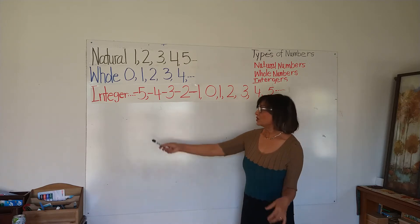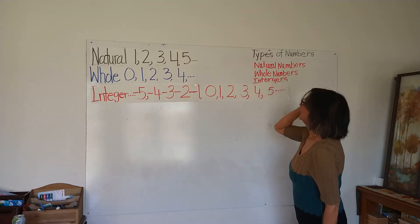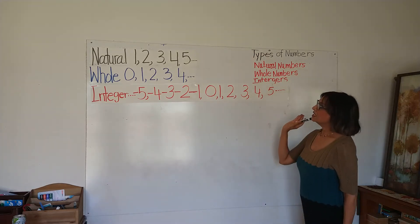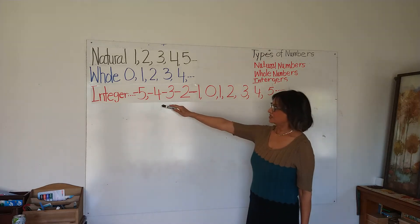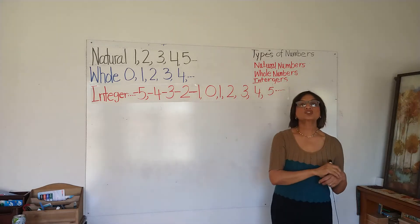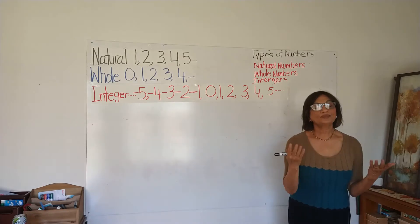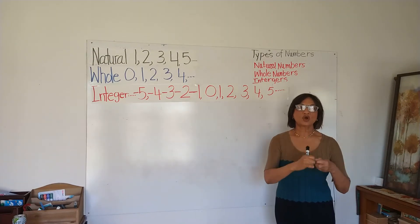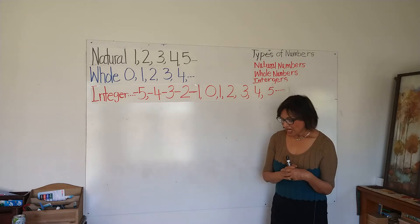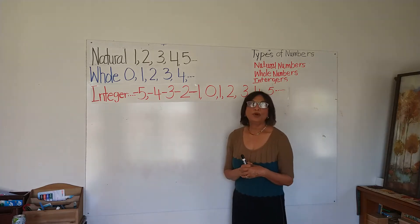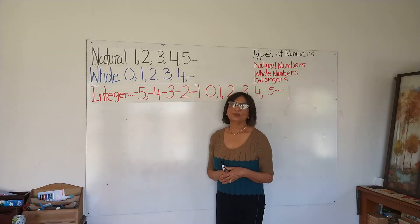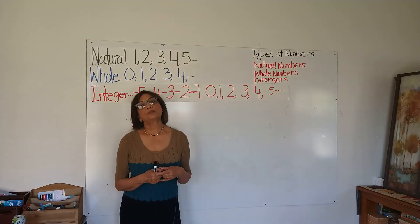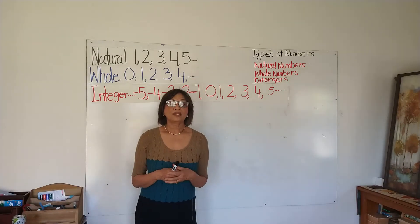So what are the integers? Integers are the combination of the whole numbers and the negative numbers. You can see here whole numbers and negative numbers — the whole set is called integers.